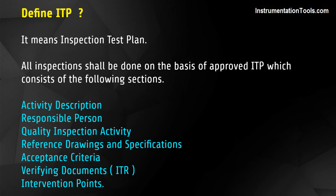The sections of ITP are: activity description, responsible person, quality inspection, activity reference, drawings and specifications, acceptance criteria, verifying documents, and ITR intervention points.